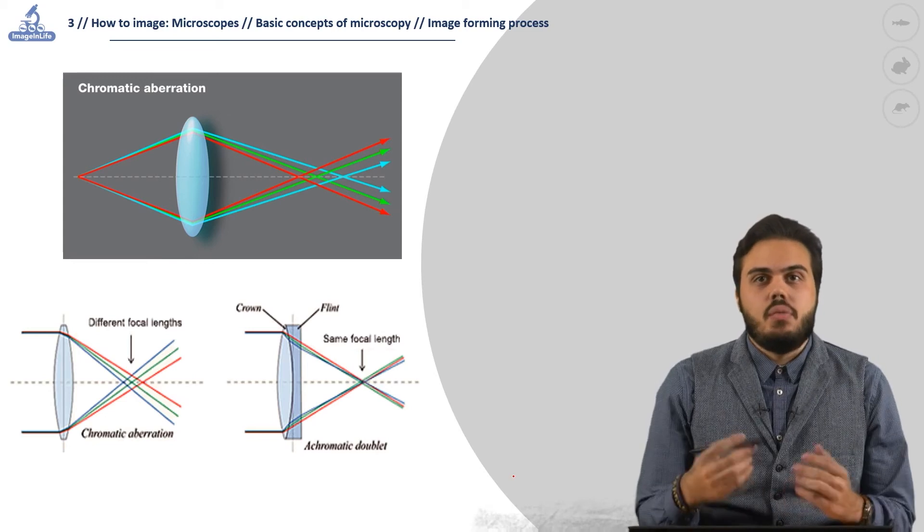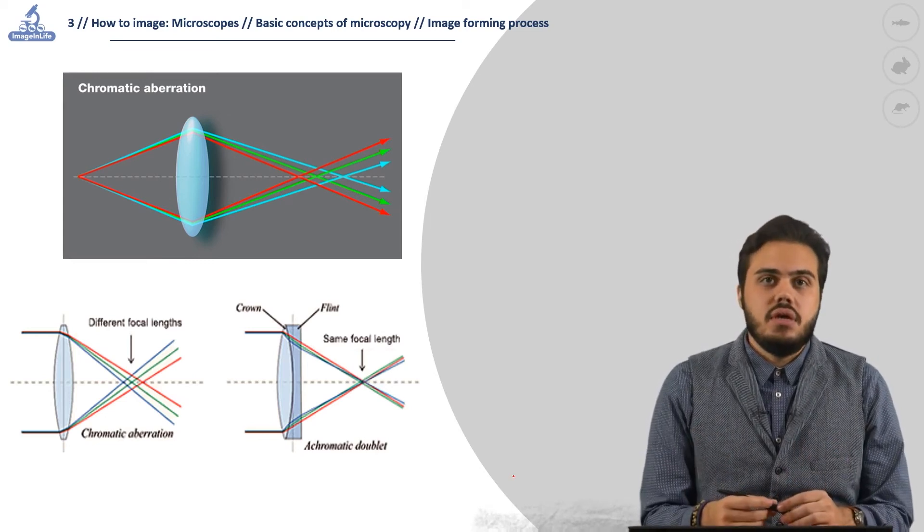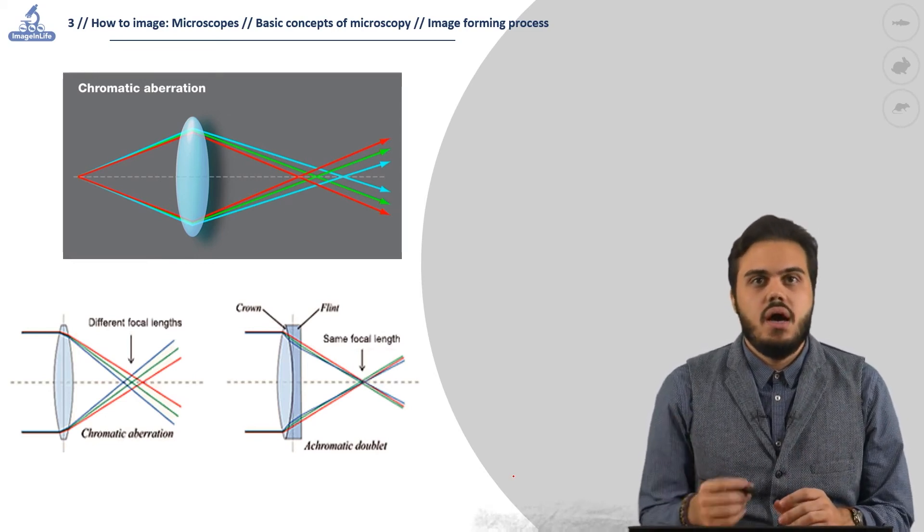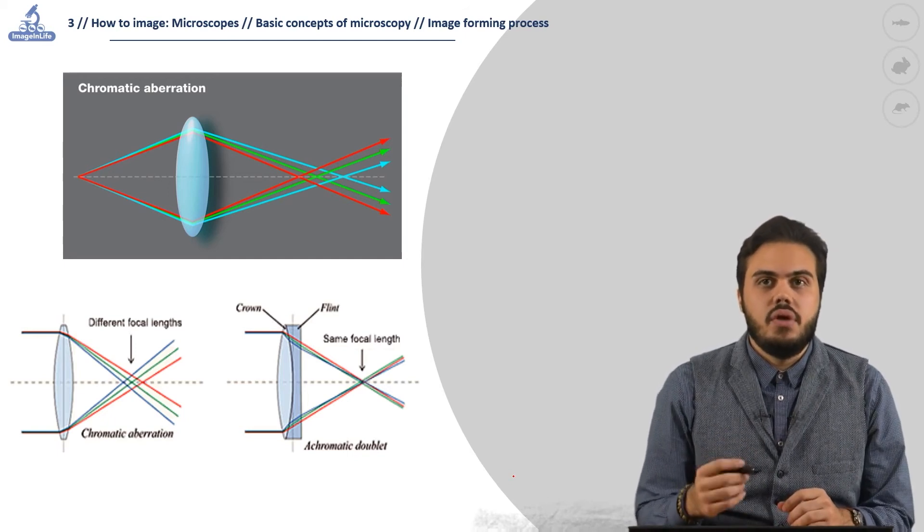To compensate the chromatic aberration, we can associate a weak diverging lens to a converging lens, creating a doublet lens.